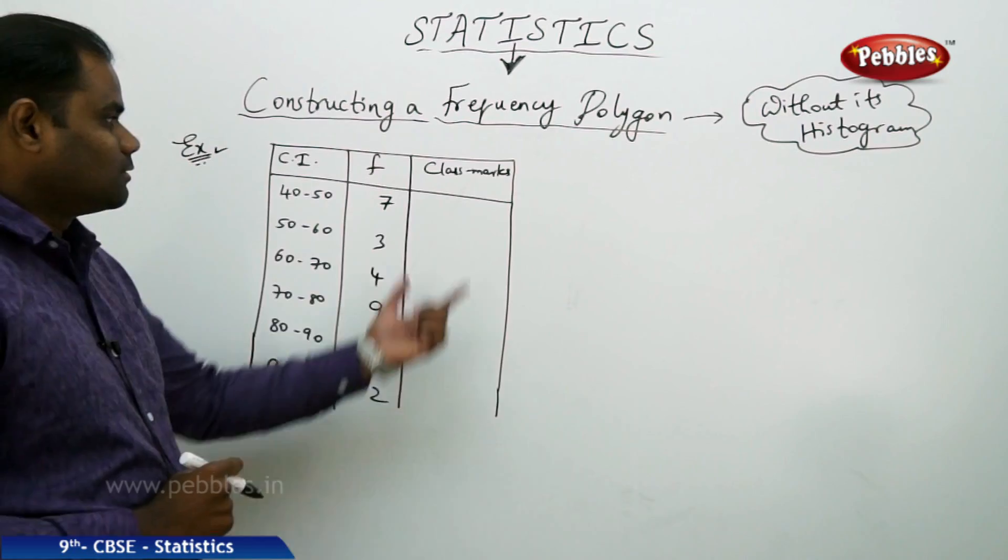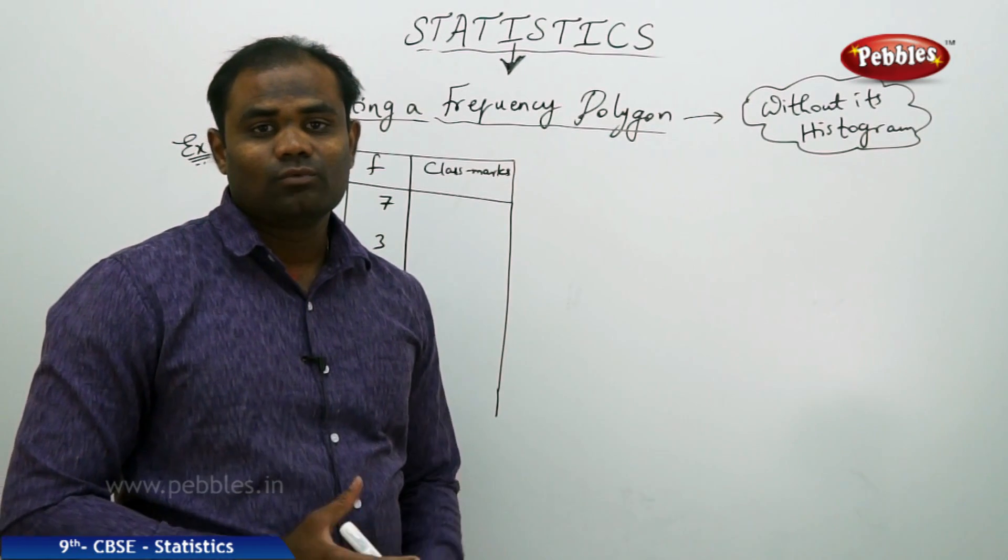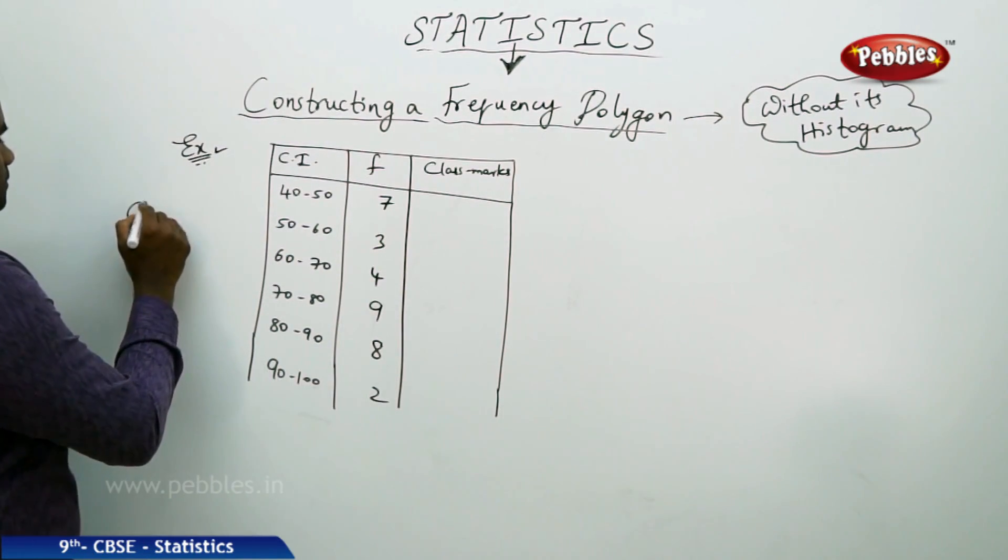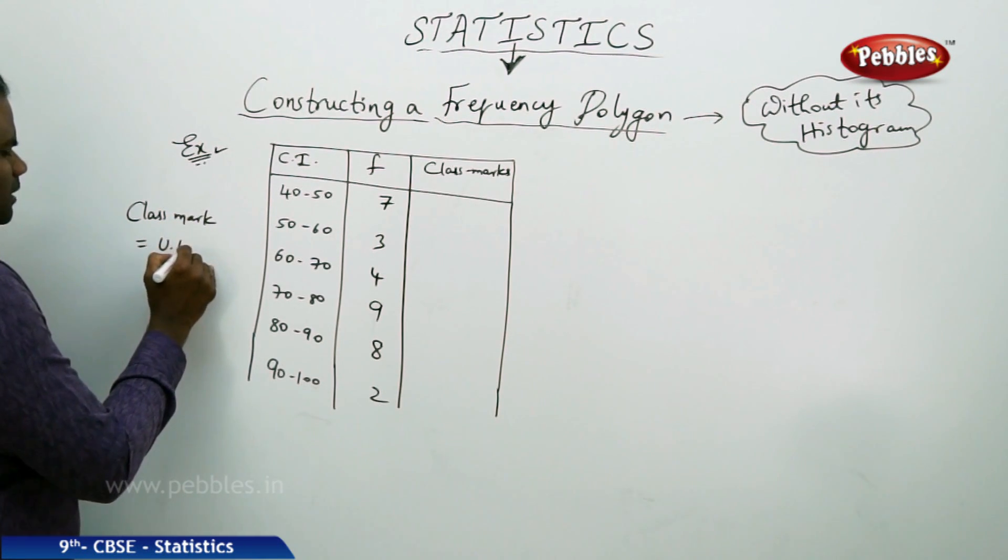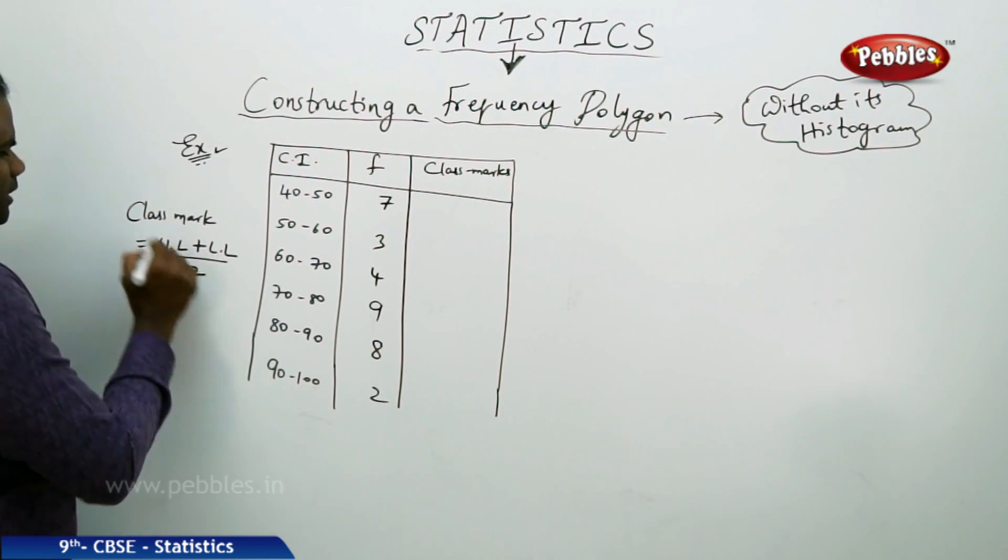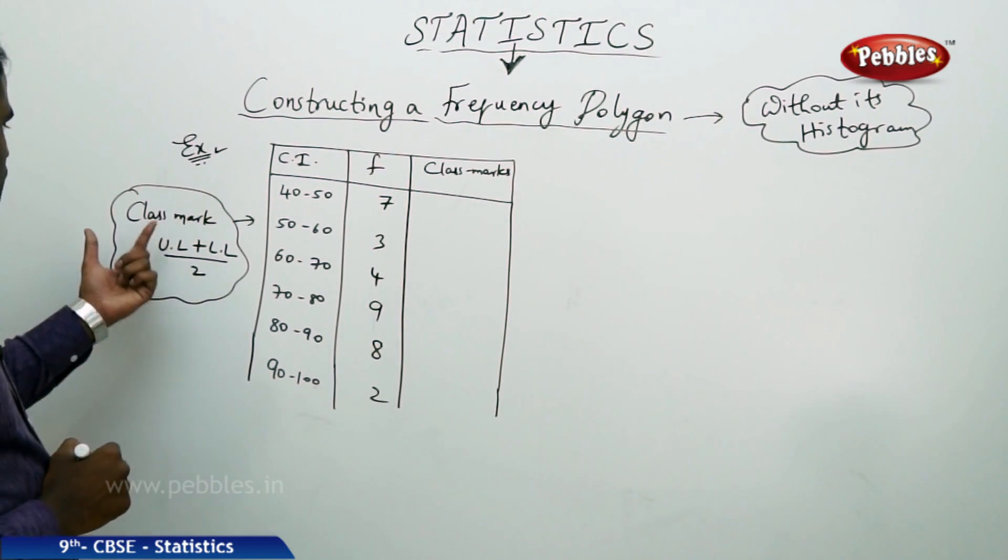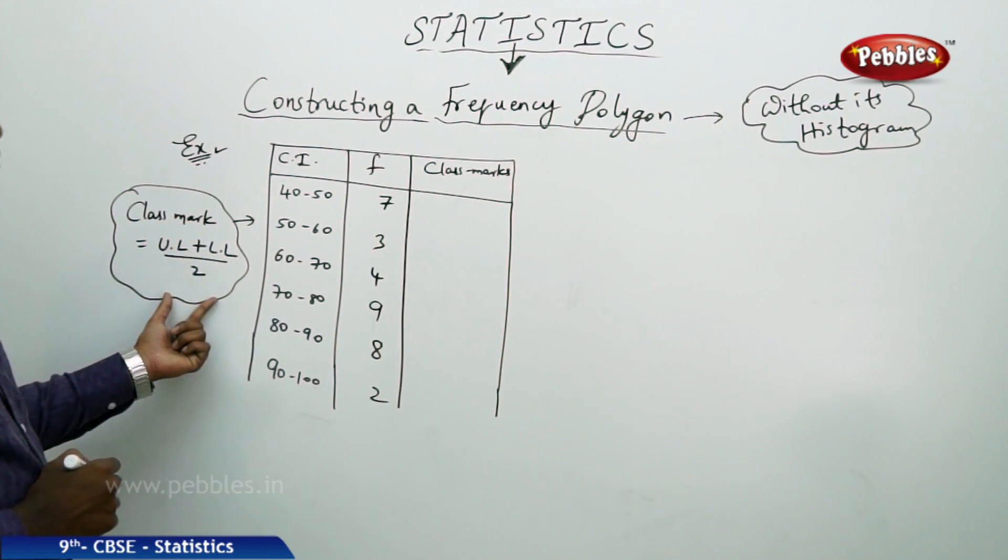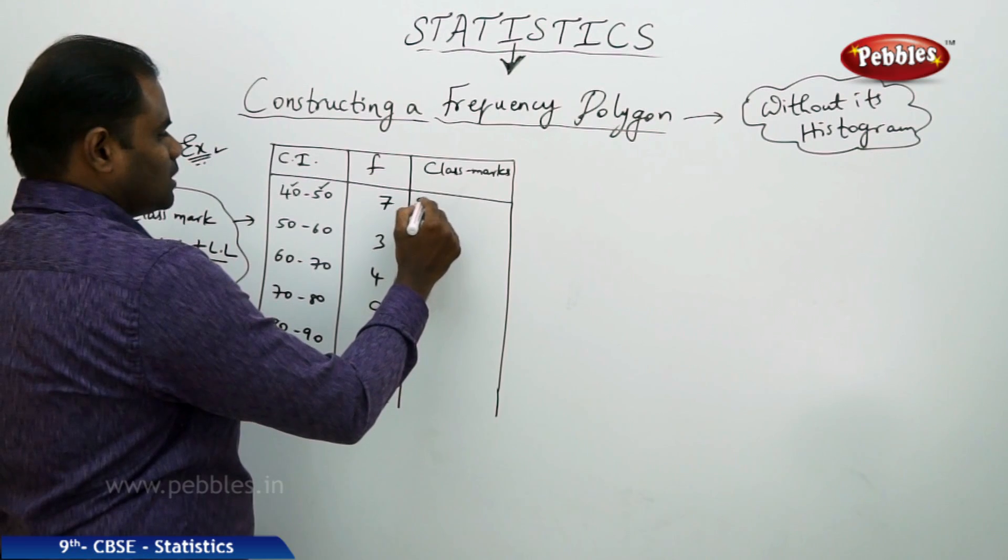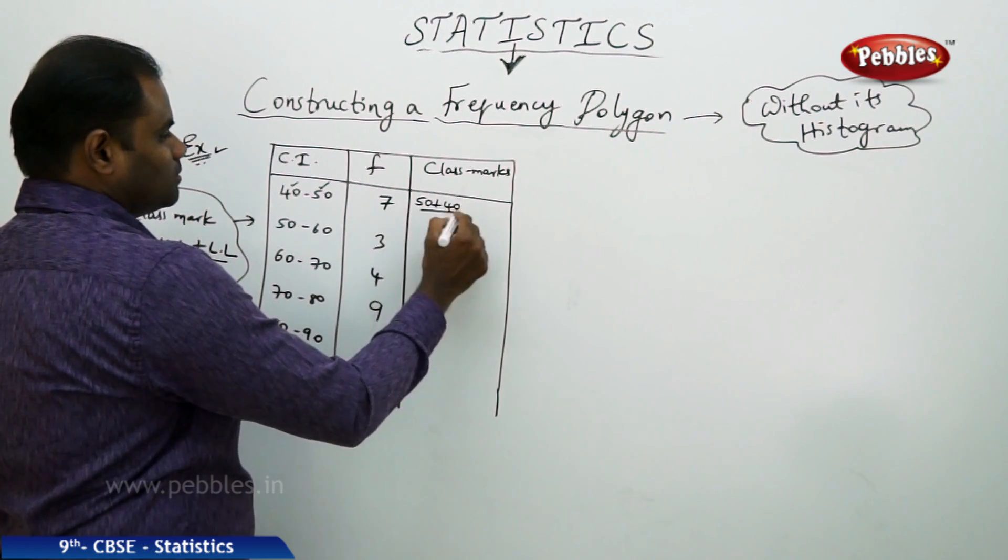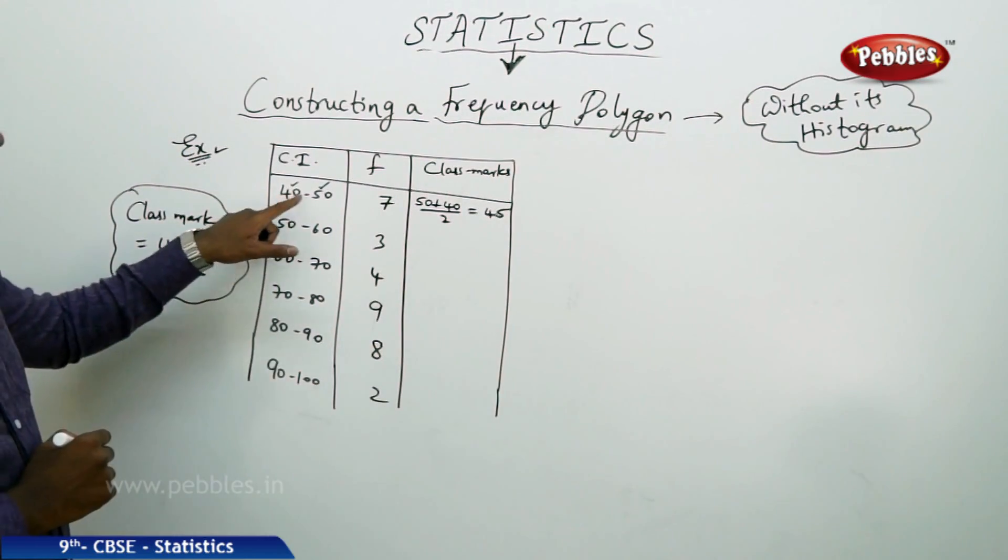So here is the frequency through which I am going to construct the new column called class marks. Class marks will help me in constructing a frequency polygon without the help of a histogram. What is the class mark? The class mark is nothing but the upper limit plus lower limit by 2. That's how we use the formula. So the formula for class mark is upper limit plus lower limit by 2. If I take the first class interval, this is upper limit and this is lower limit.